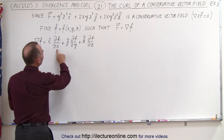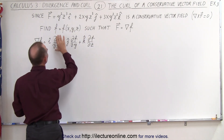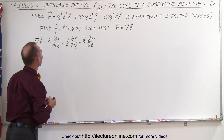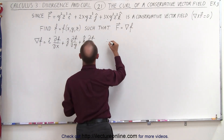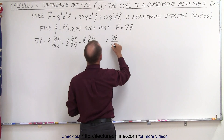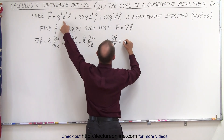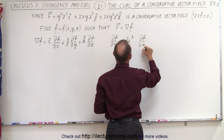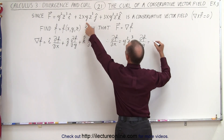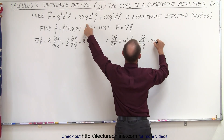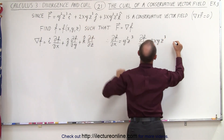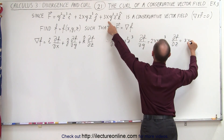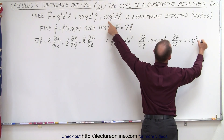Notice that the gradient has the same format as our vector function, which means we can equate the components. So the partial of f with respect to x is equal to y²z³, the partial of f with respect to y is equal to 2xyz³, and the partial of f with respect to z is equal to 3xy²z².